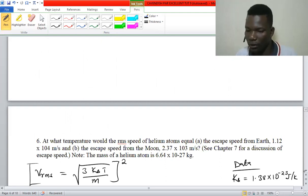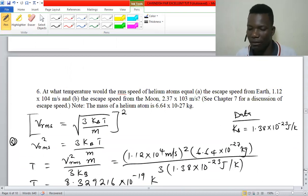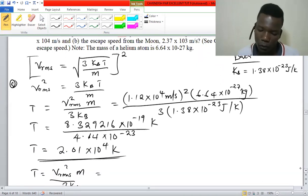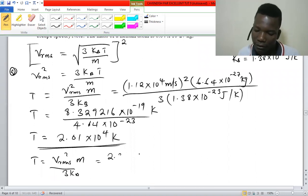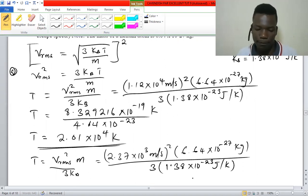What differs now is here we have been given 2.37 × 10^3 m/s. This is squared, and the mass still remains the same: 6.64 × 10^-27 kg divided by 3, and Boltzmann constant also remains the same.